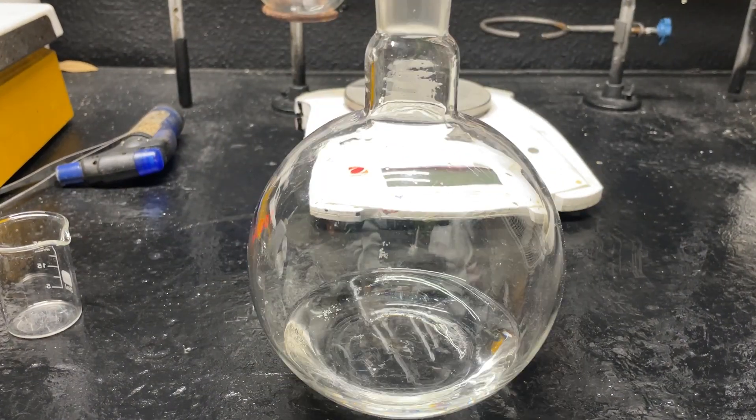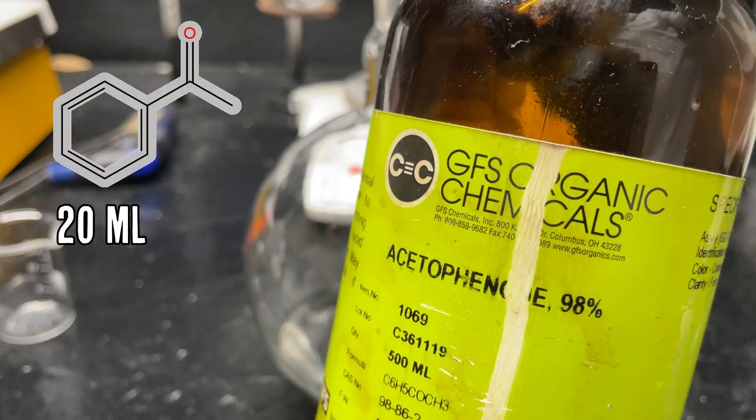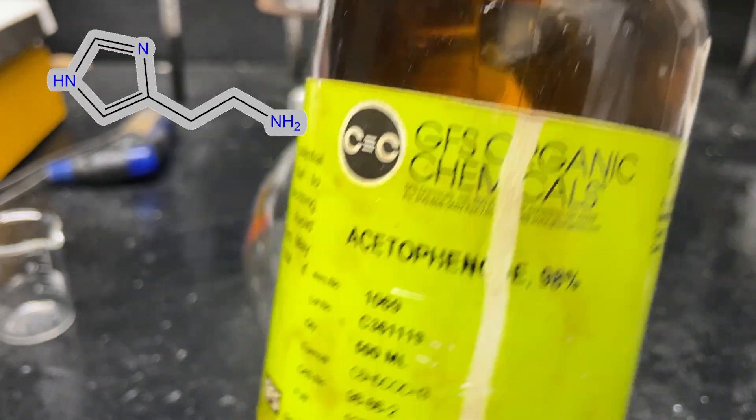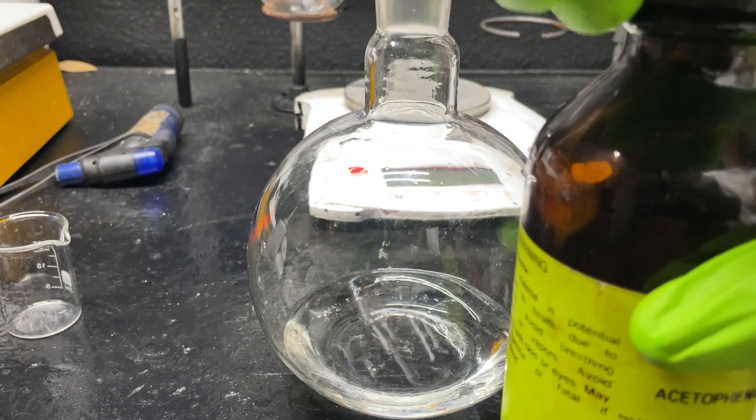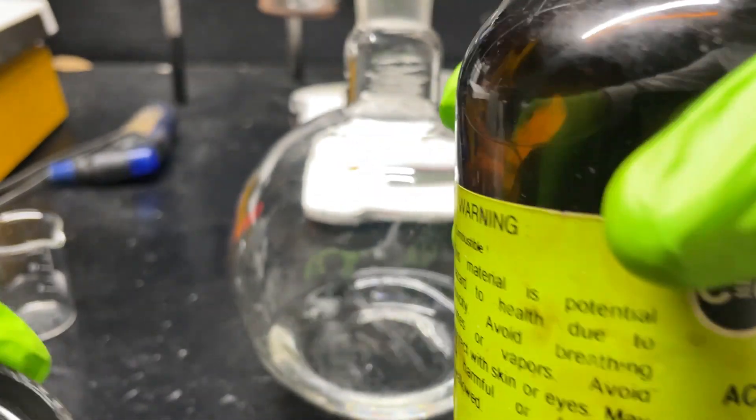And now for our mace we also need acetophenone. You've probably seen this plenty of times in my videos before - I use this to make histamine, the essence of allergies, and serotonin. But we're also going to be using it to make mace. What a versatile chemical here.